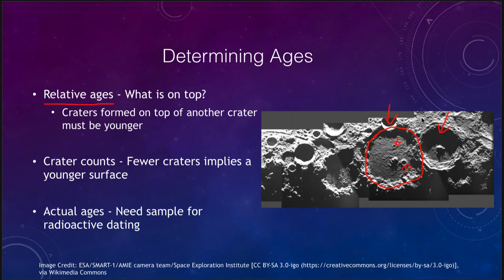We know that these craters could not have been here first, because then this crater would have wiped out parts of them or wiped them out completely. So craters formed on top of another crater must be younger — the younger object is always going to be on top.